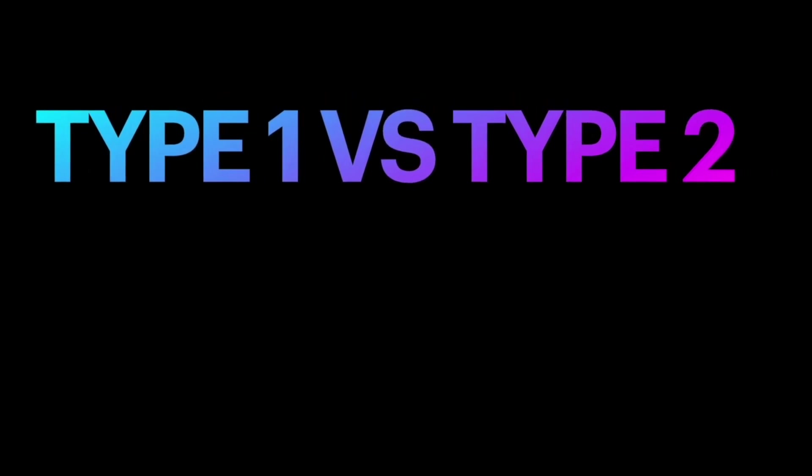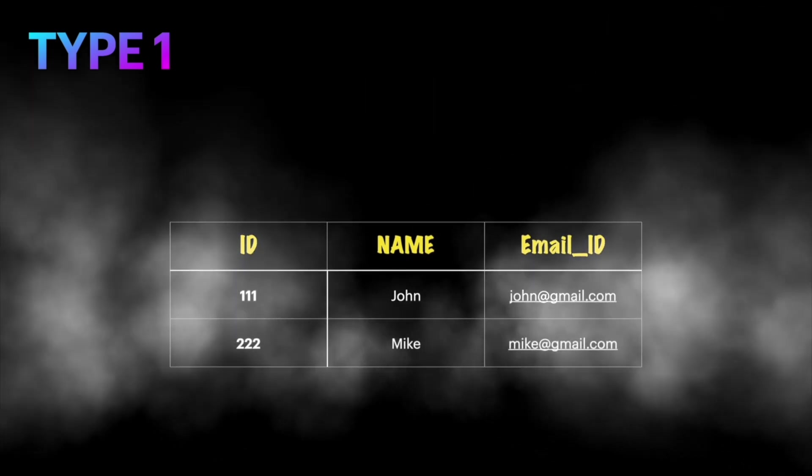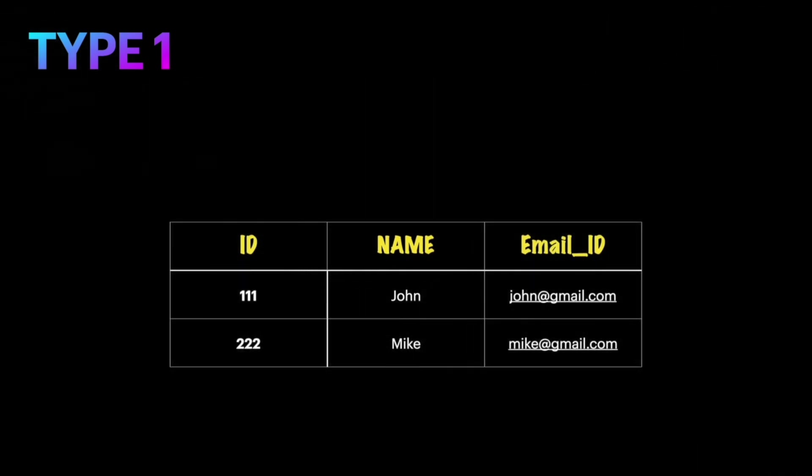Let's see what is the difference between Type 1 and Type 2. Before seeing the difference, let's understand what Type 1 is. Consider we have an existing employee table that contains two rows with columns such as id, name, and email id.